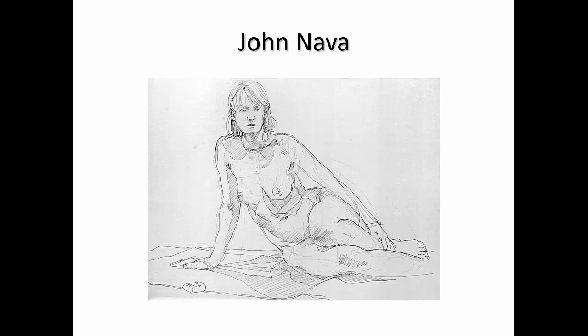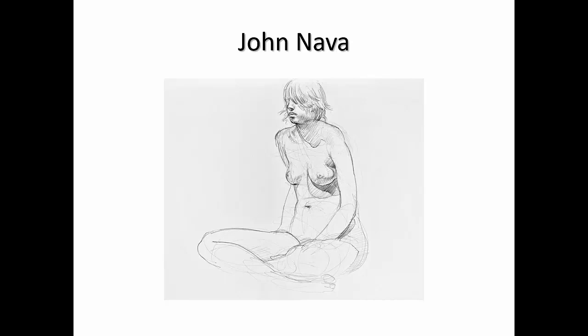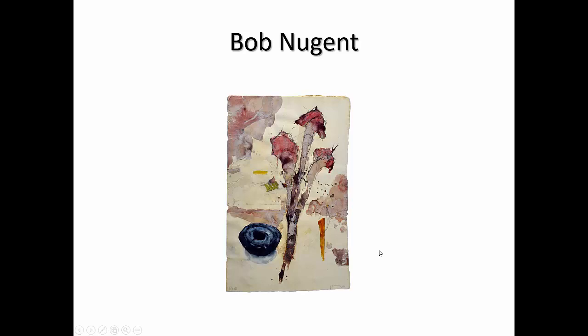John Nava is a contemporary artist who's pretty well known in the Bay Area. He actually was a student of Warshaw. And so was this person, Bob Nugent. He was a student of Howard Warshaw. So these are both contemporaries of each other, John Nava and Bob Nugent, and they were taught by Warshaw. Bob Nugent, who does these organic objects from the Amazon, taught me, James Kleckner. So I wanted to pass this along that there's this history. Basically, Lebrun taught Warshaw, Warshaw taught Nugent, and Nugent taught myself. And I am passing this down to you in my work.